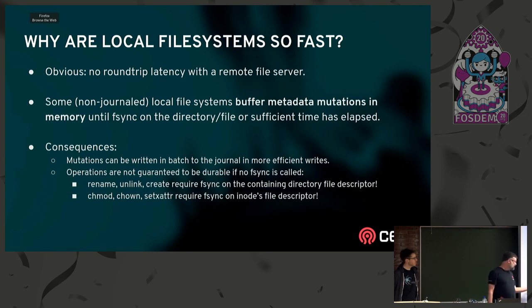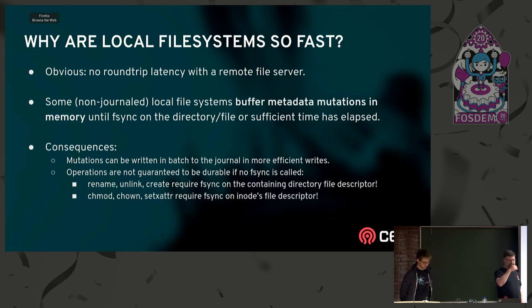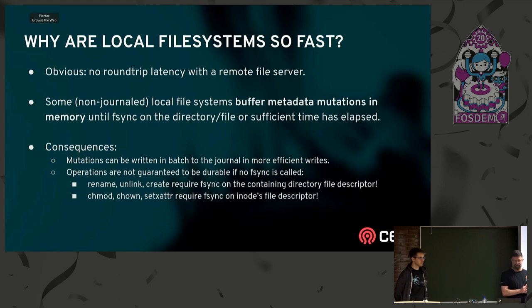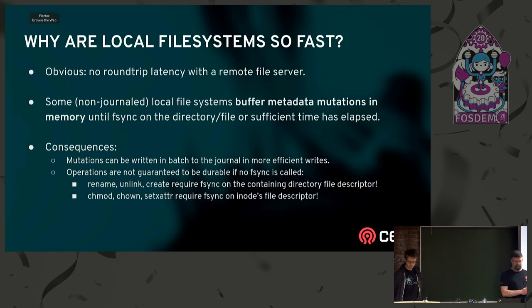The consequence is that local file systems can batch out writes to the journal — you build basically a transaction and flush it out. But those operations are not guaranteed to be durable unless you have sync. If you do a rename or unlink and the box crashes before the data hits the disk, that operation may turn out never to have happened, even after you've returned to user land. Now in most modern journal file systems, that's not such an issue — they almost all synchronously write to the journal before returning to user land. But technically you're supposed to fsync to ensure that your operation persisted on disk.